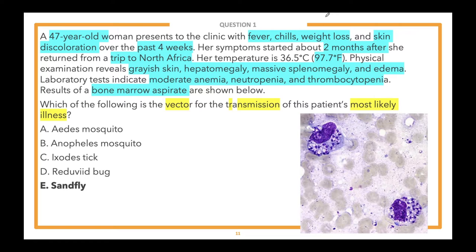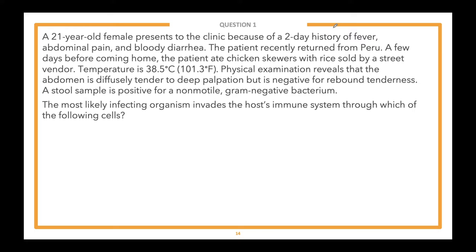Excellent — let's move on to our second question of the evening. Once again, the answer choices have been removed by design. The lead-in is: the most likely infecting organism invades the host's immune system through which of the following cells? Take a few moments to let us know how many steps you think this question will require.